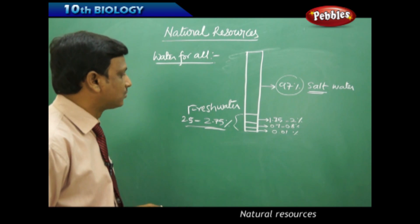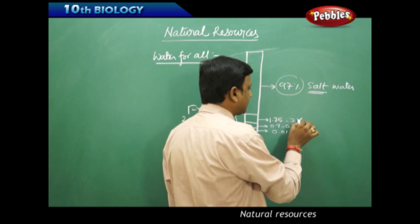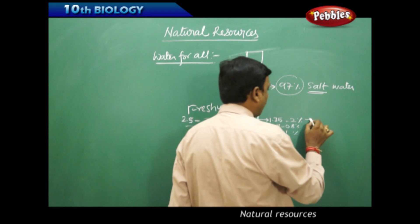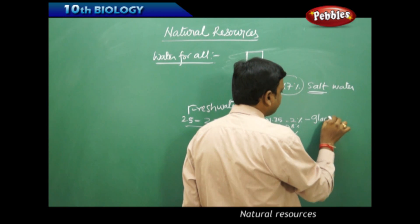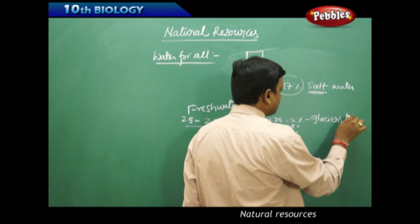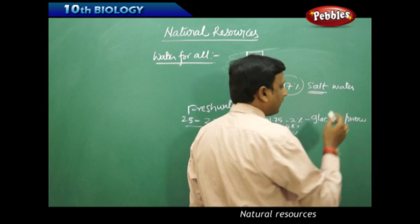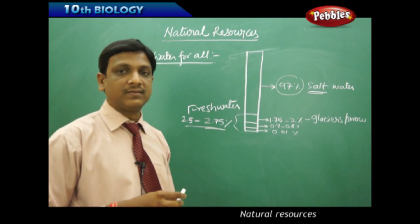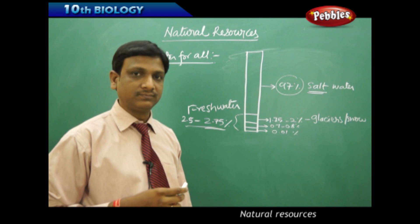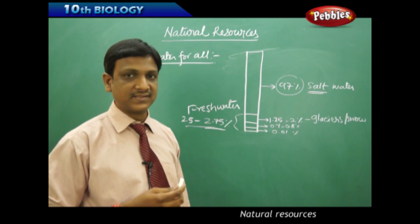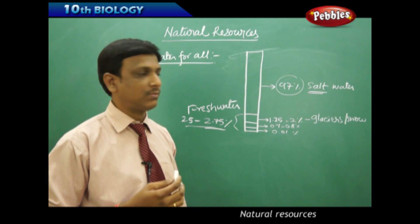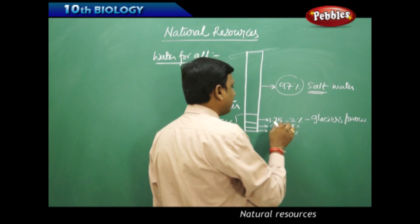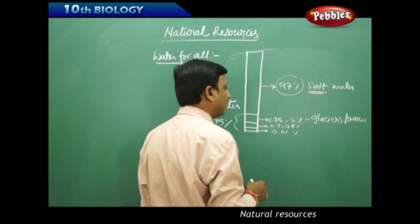Among these, 1.75 to 2% of the freshwater is in the form of glaciers and snow, in those ice mountains. That is 1.75 to 2% of freshwater is in the form of glacier and snow.